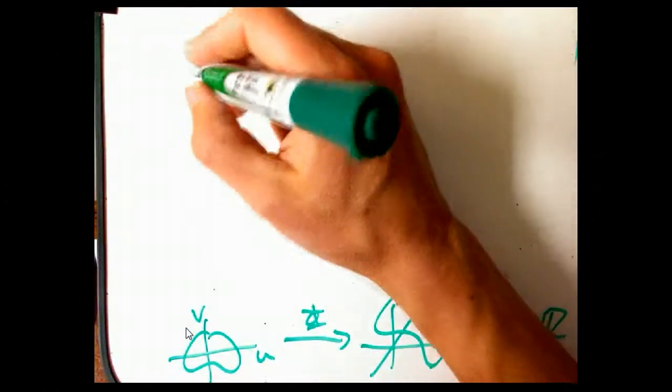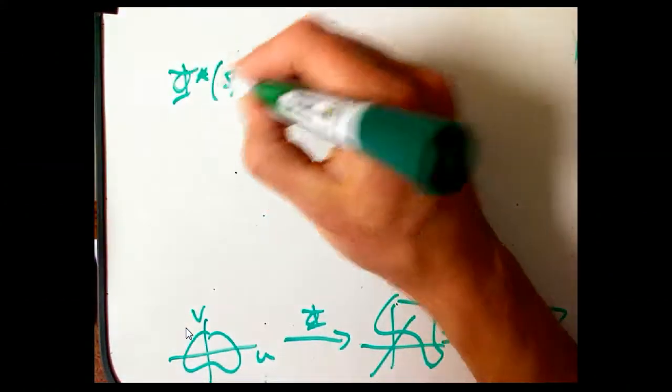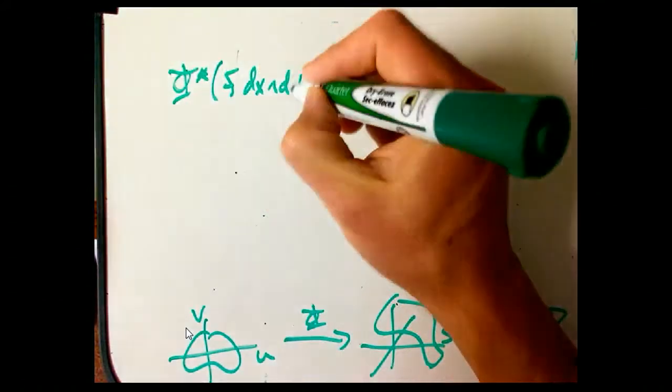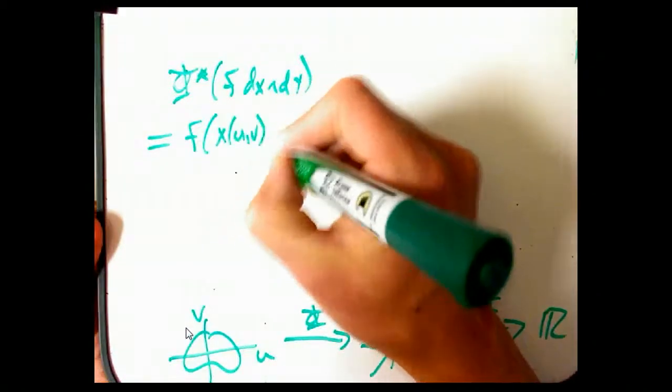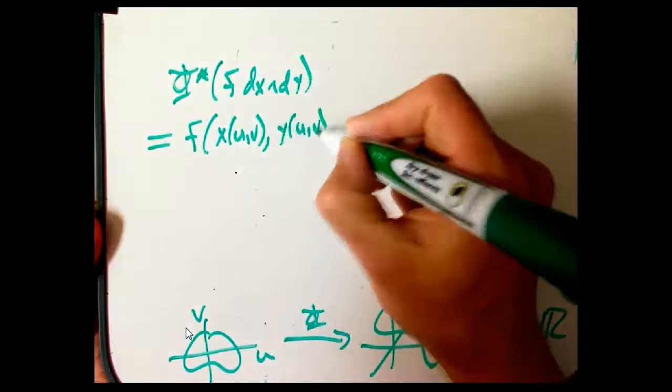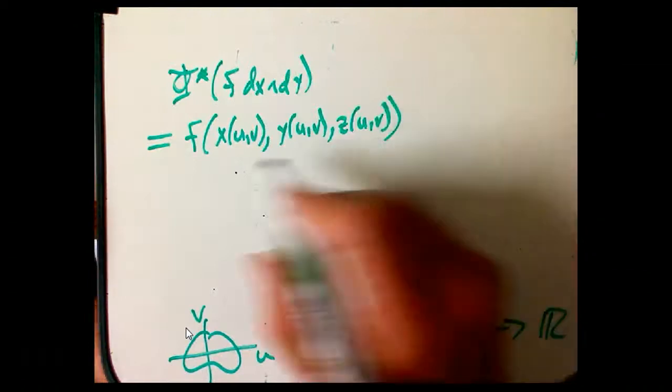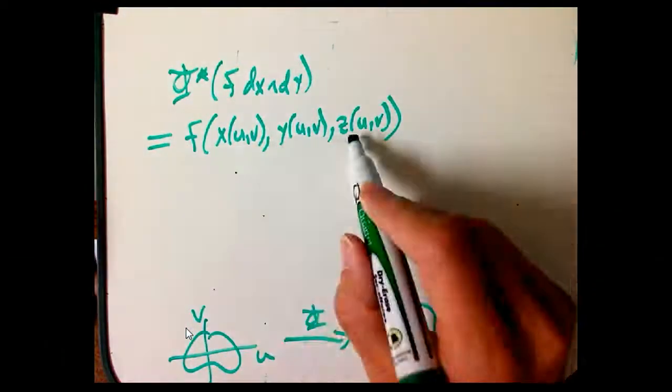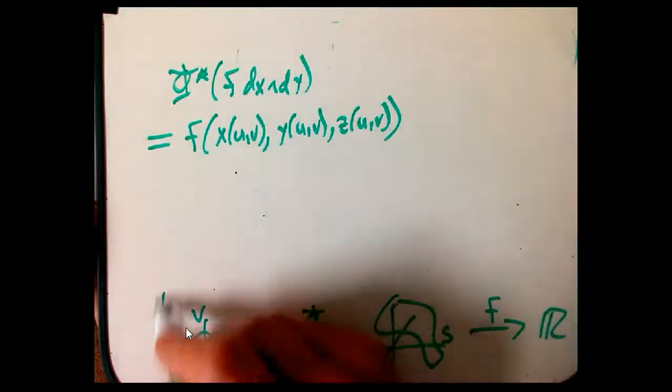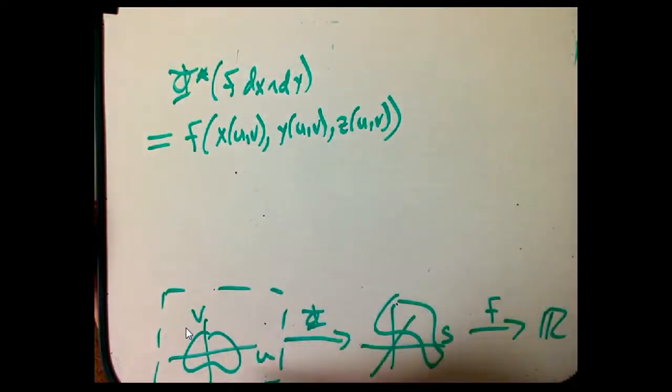Where we were at was that φ star of f dx wedge dy, I'm going to write that out very explicitly and I'm not going to always write it out so explicitly because it just takes time and it's a little messy looking. But this is what f composed with φ really means. It's exactly what we always do when we're integrating over something and parametrizing. We put things into the u and v variables. So the goal is to get everything back to R² and it's really important that u and v are the variables there.